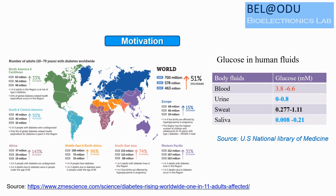Diabetes is a disease that occurs when glucose levels in body fluid are too high. About 463 million diabetes patients were recorded worldwide in 2019, and this number will possibly rise to 700 million by 2045 — a 51 percent increase.